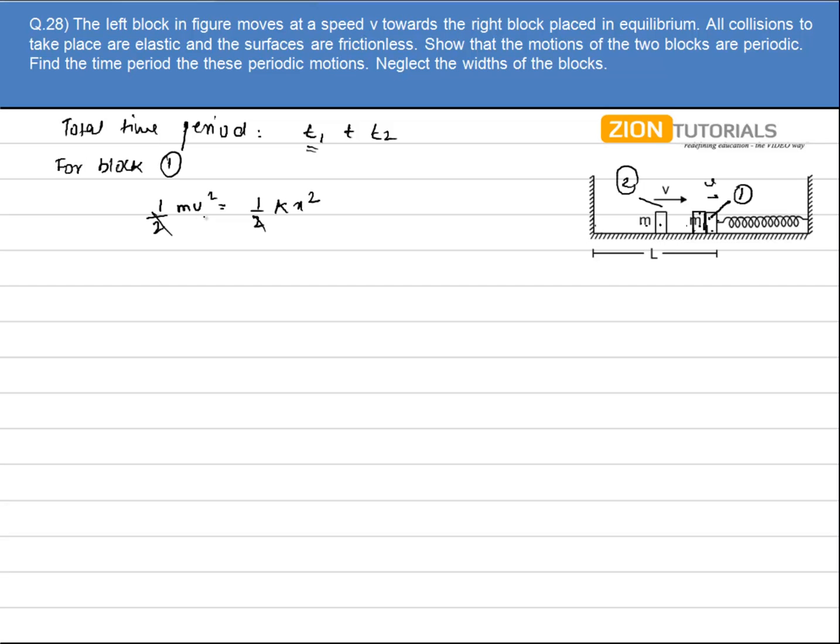So I can write the compression can be equal to mv square by k under root. Now time period will be equal to 2 pi under root of m by k. This is the time period for the SHM performed by block 1.